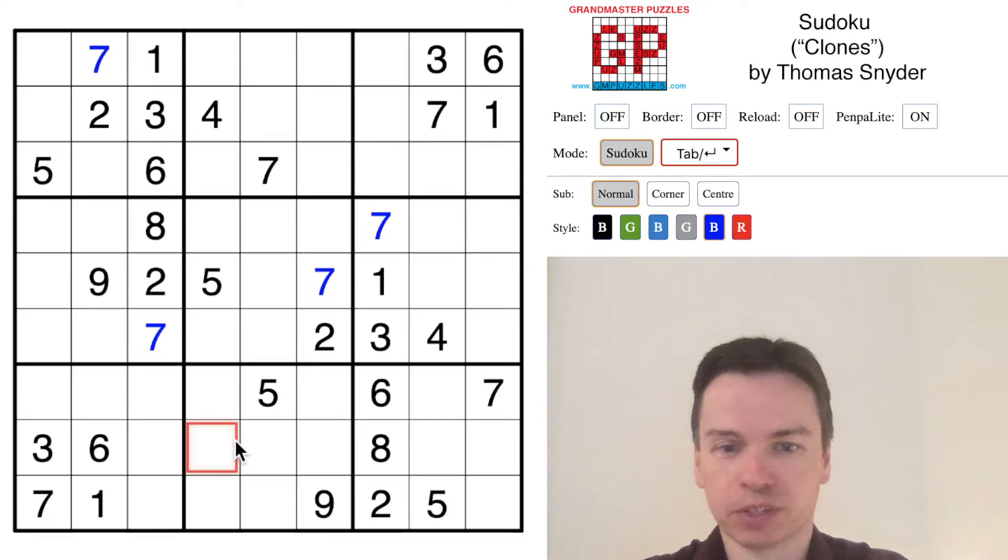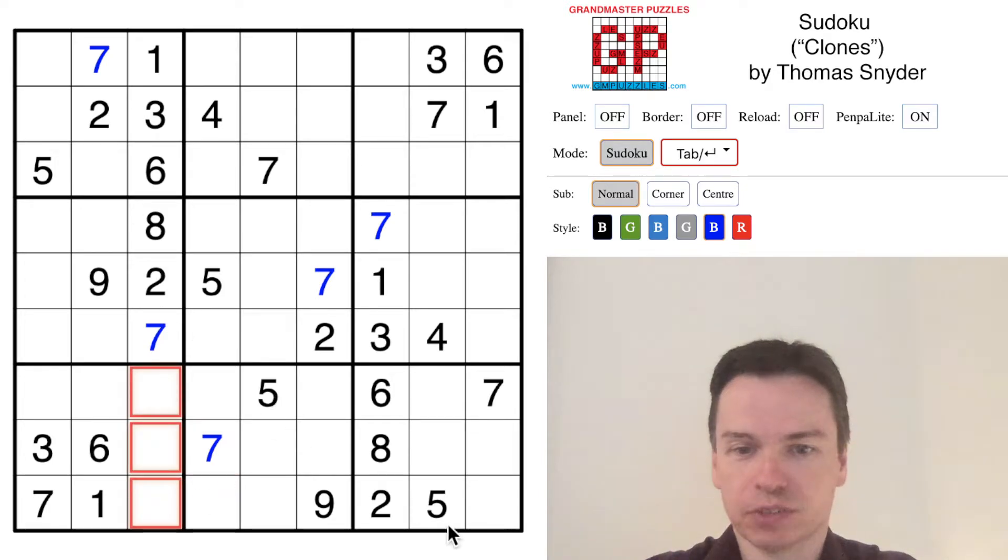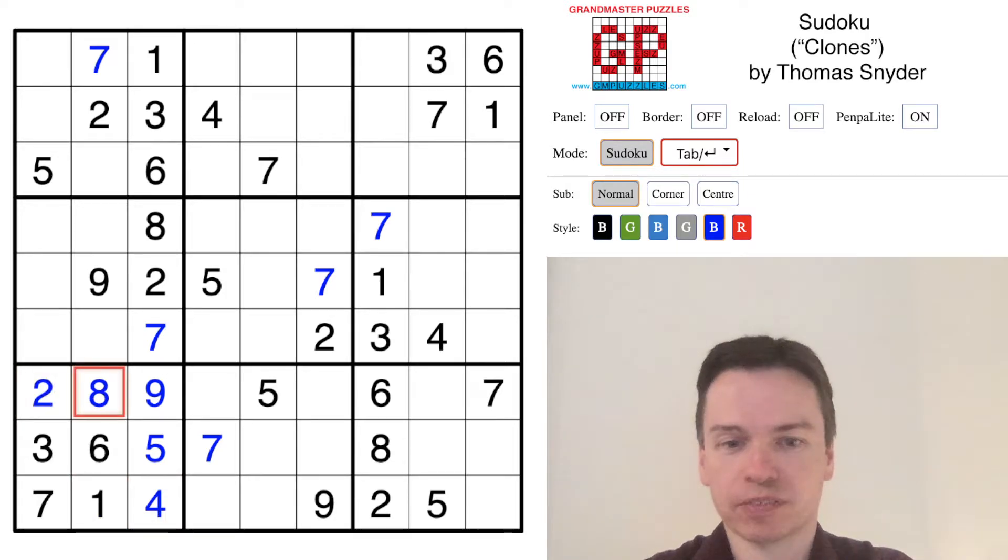Actually all the sevens come in quickly as a consequence. We've got four, five, nine left to go here, and we actually have two fives already given, so the five is there. The nine has to be up top because of this nine over on the bottom. Four in here. Two and eight complete this box. Two to the left, eight to the right.